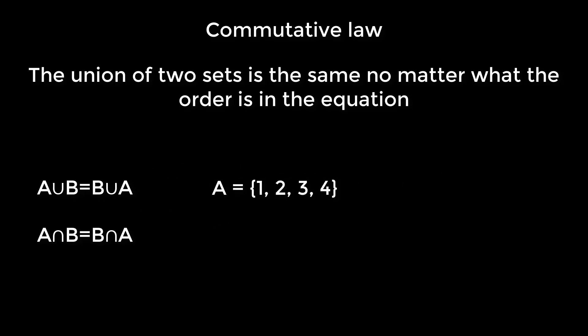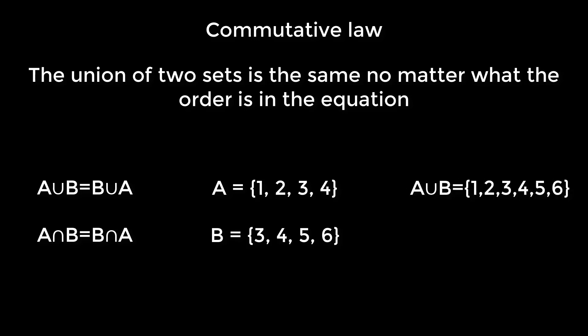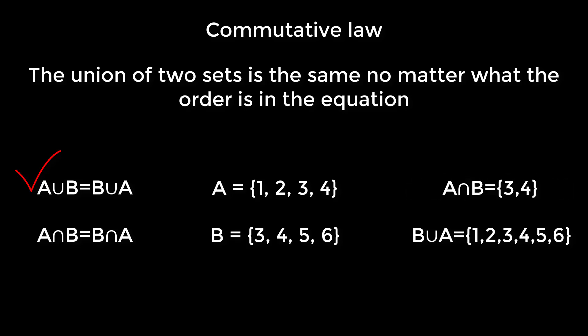Suppose A is the set {1, 2, 3, 4} and B is the set {3, 4, 5, 6}. Then A union B is the set {1, 2, 3, 4, 5, 6}, and B union A is also the set {1, 2, 3, 4, 5, 6} — that means they are the same. If we take A intersection B, we get the set {3, 4}, and B intersection A is also the set {3, 4}. This is exactly what the commutative law says.